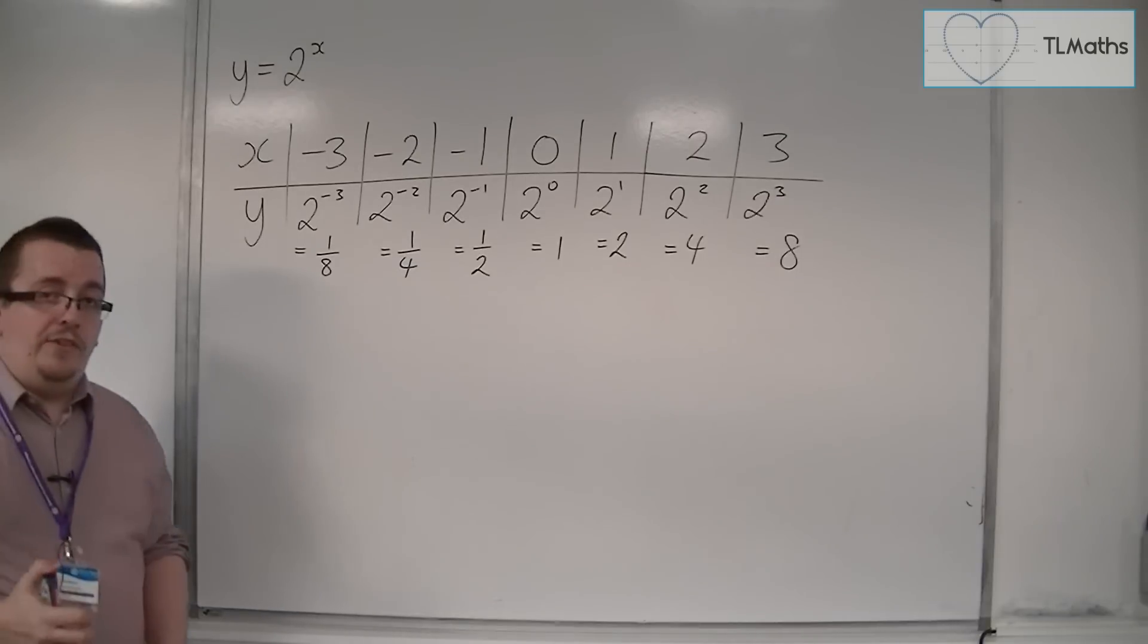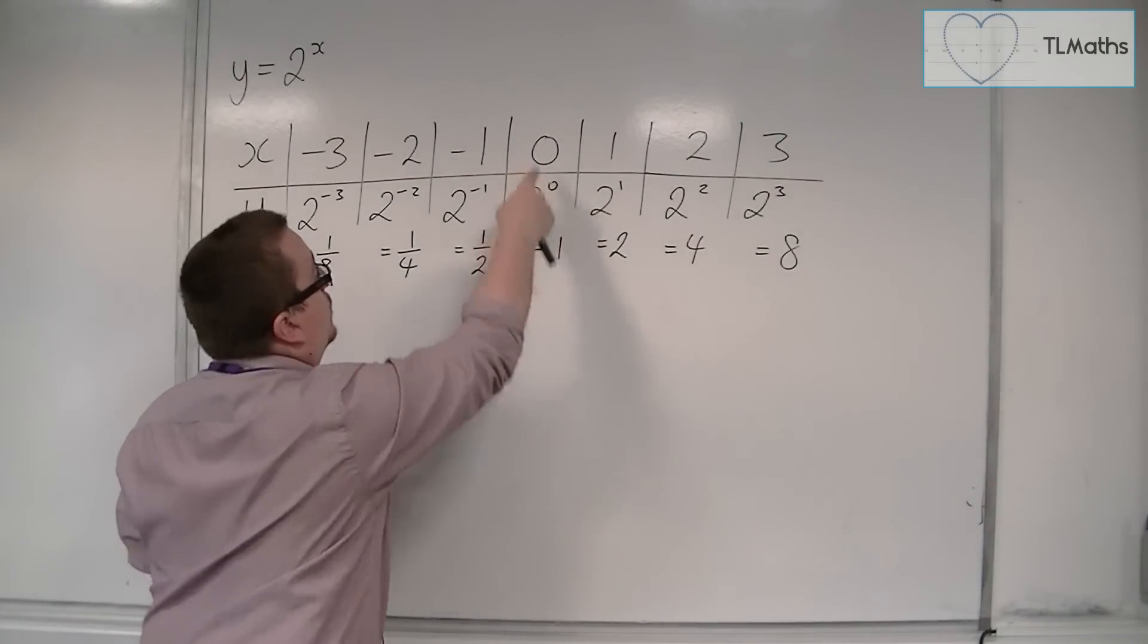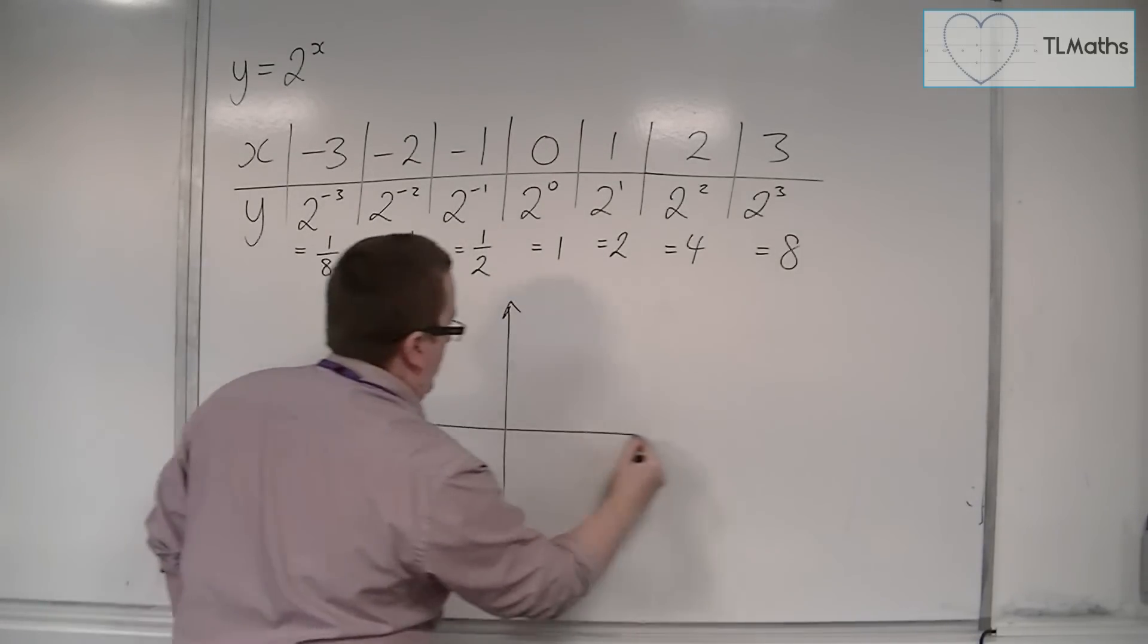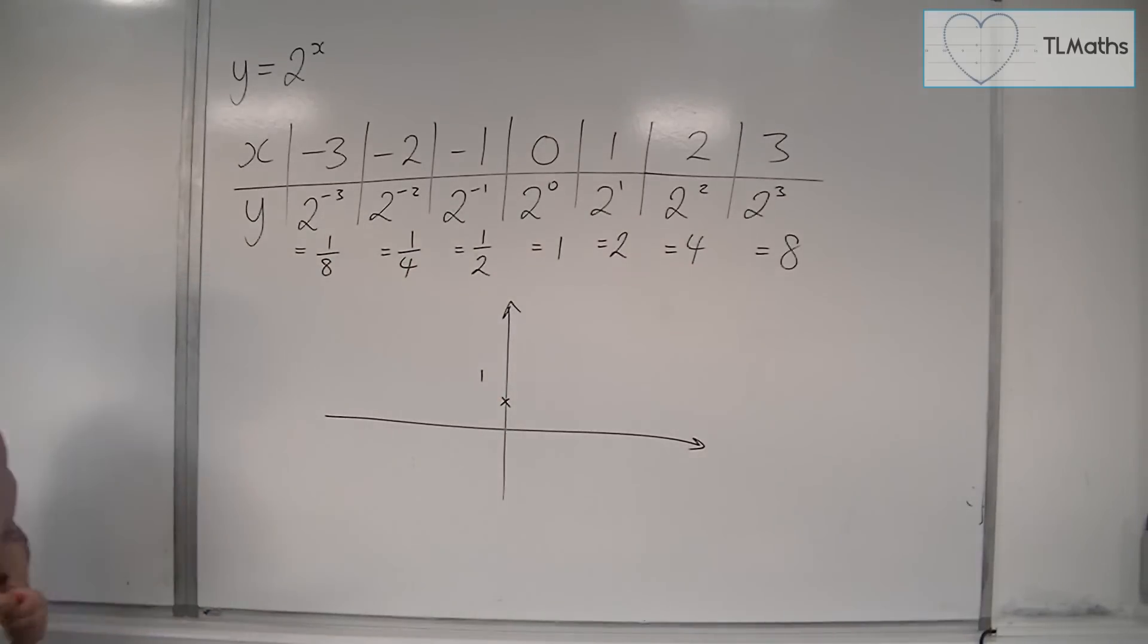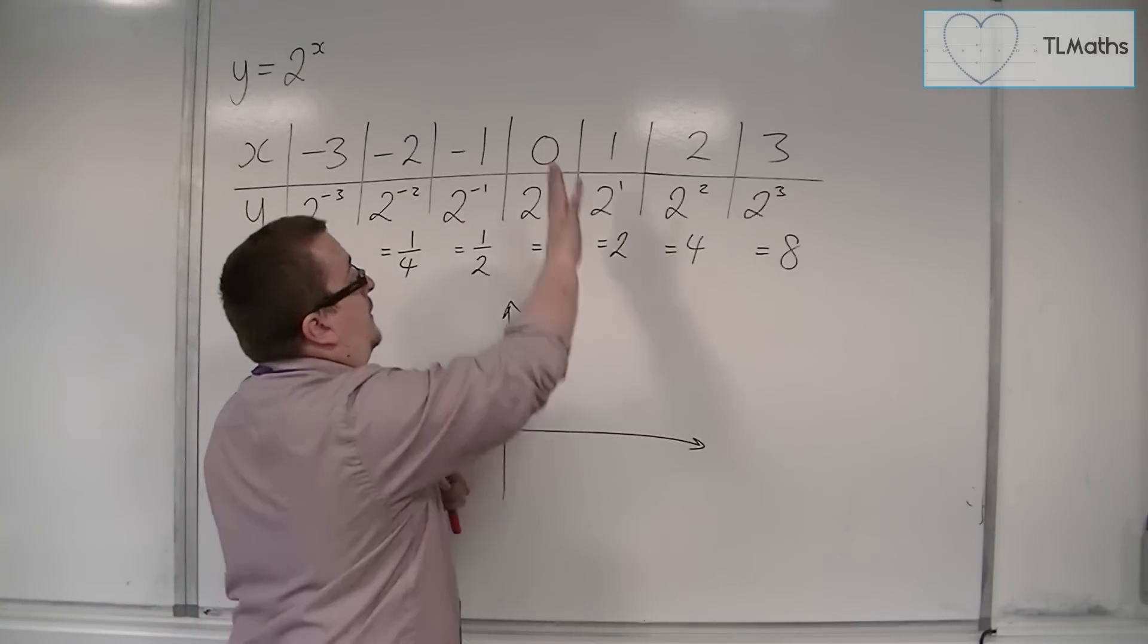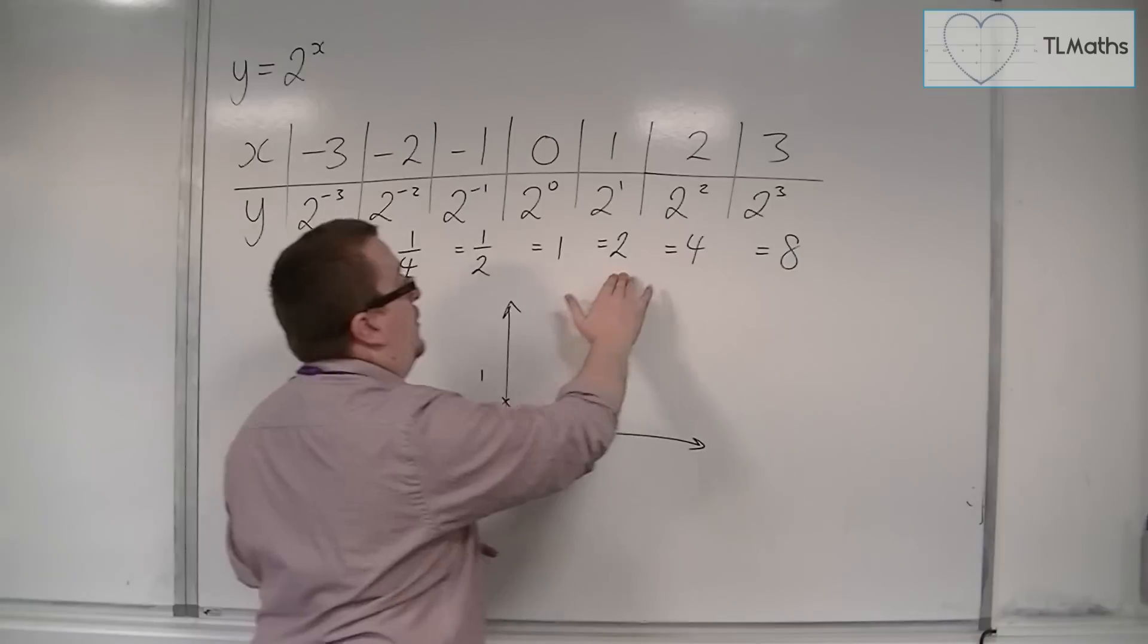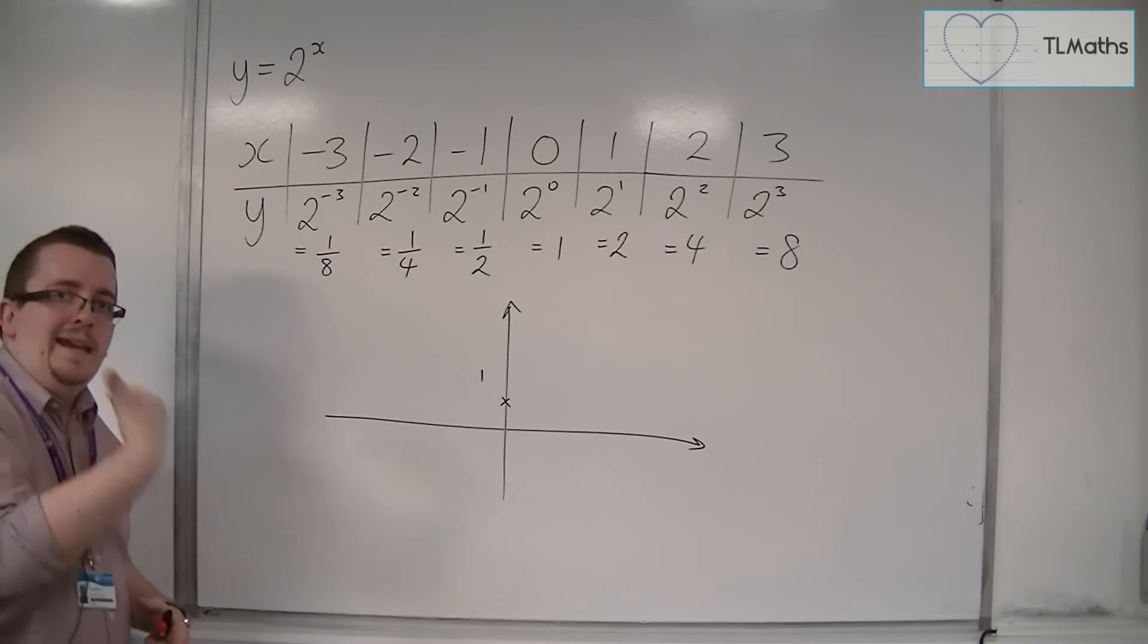We can see that this curve will go through 0, 1, so it goes through 1 on the y-axis. As x increases - 1, 2, and 3 - y is also increasing: 2, 4, 8. In fact, y is doubling each time.